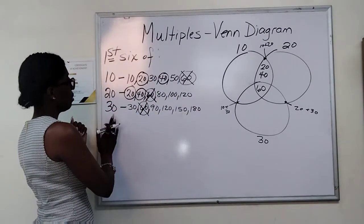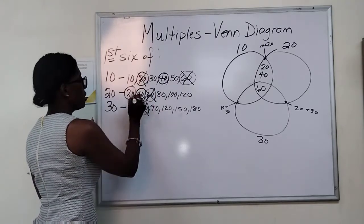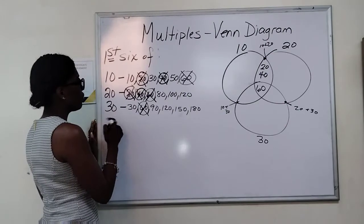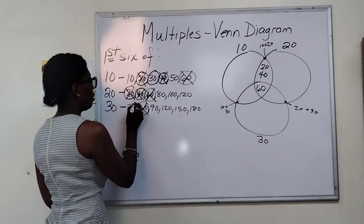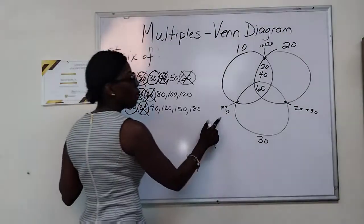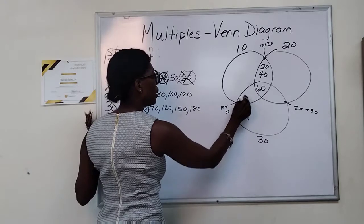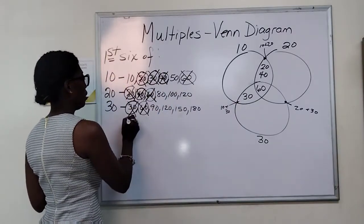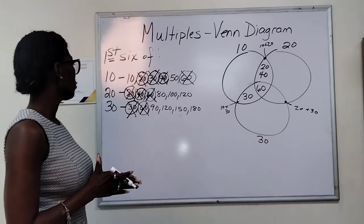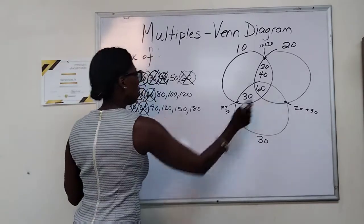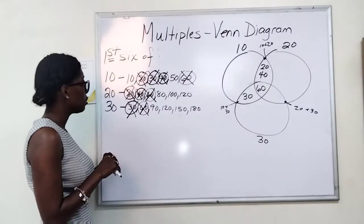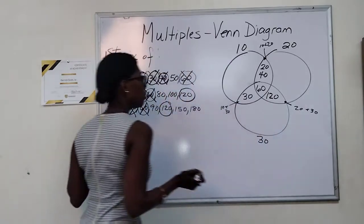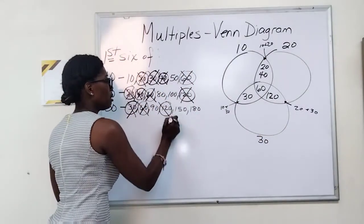20 and 40 are multiples of 10 and 20 only. Let's do 30 and 10. Let me cross these out so we don't get confused. We cannot use those again. 10 and 30 has 30 in common. The multiples of both 10 and 30 only would go here, and we said that it was 30, so we're going to put 30 there. And let's go ahead and cross them out. What about 20 and 30? What does 20 and 30 have in common for multiples? 120. We'll go here.